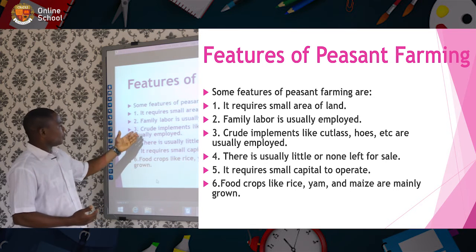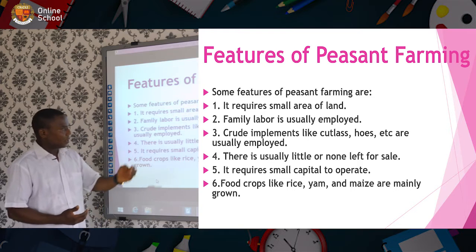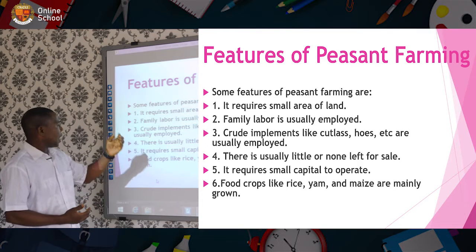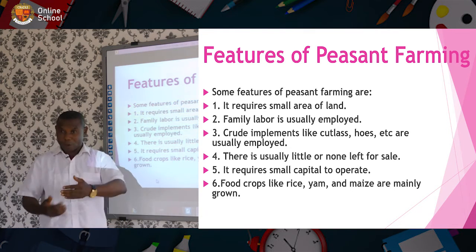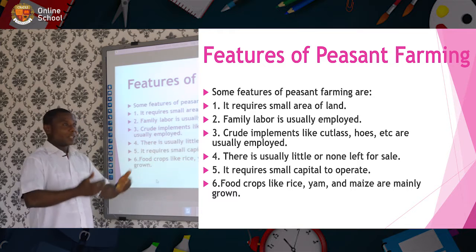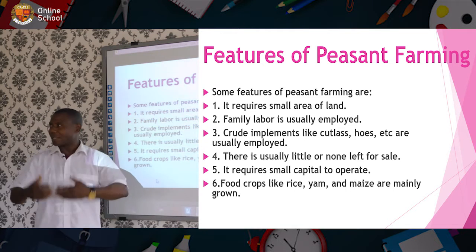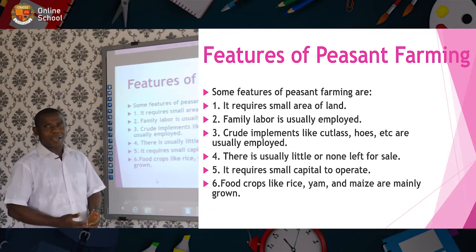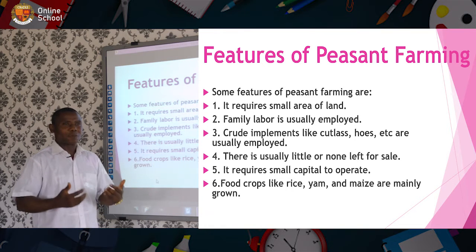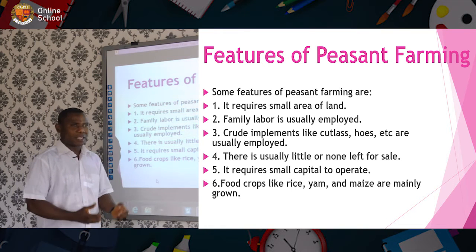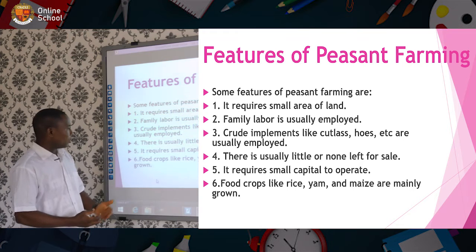Number three, simple implements like cutlasses and hoes, etc., are usually employed. In the morning, you just carry the cutlass and the hoe, then you go ahead and carry out your work. You don't need sophisticated implements to carry out this type of farming.